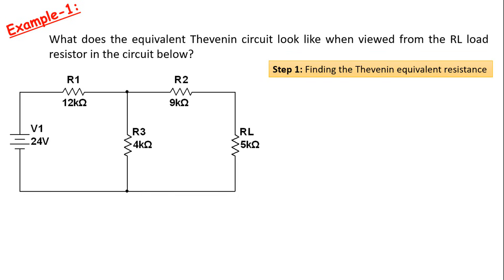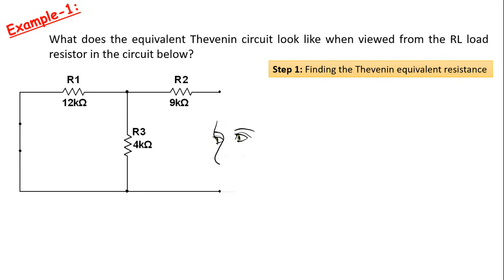The first step is to find the Thevenin equivalent resistance. For this, we first need to remove the RL load resistor from the circuit. Now we can look at the circuit between these two points. Then we need to open-circuit the current sources and short-circuit the voltage sources. Since there is only one voltage source of 24V, we must short-circuit it.